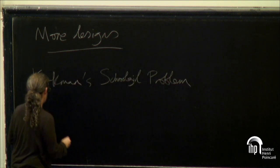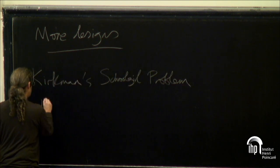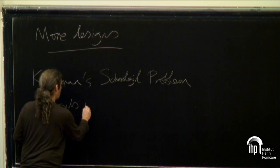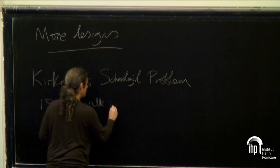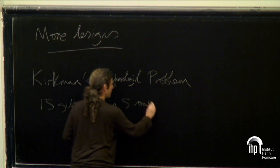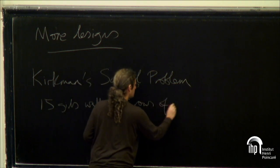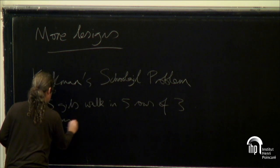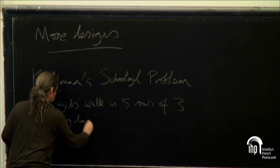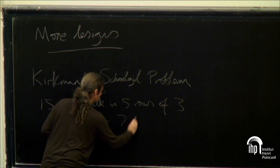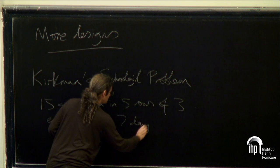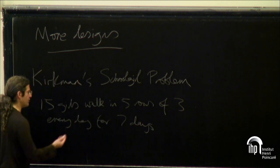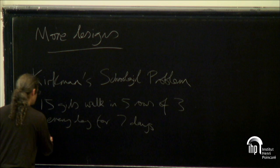There are 15 girls who walk in five rows of three every day for seven days, and you want to arrange them so that every pair are in the same row exactly once.